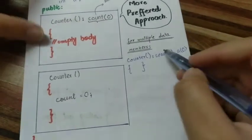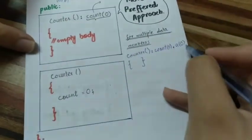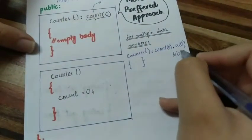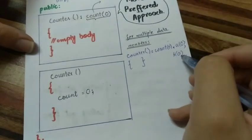Here we have multiple data members. For example, if you have a data member int B, so simply what do you need to do? Comma, B, and 0. This is an initializer list.